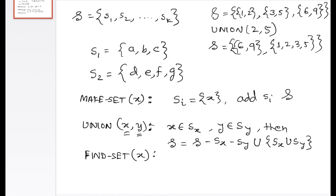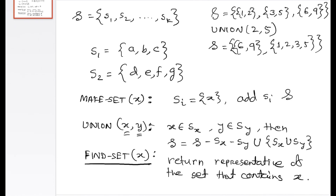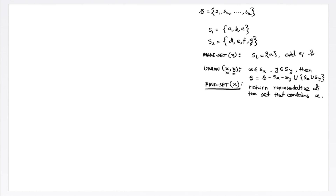The final operation is find_set. Find_set(x) returns the representative of the set that contains x. These are all the definitions associated with the disjoint set data structure. We will now see an example — one of the applications of disjoint set data structure is to find connected components in a graph, that is groups of vertices in a graph.